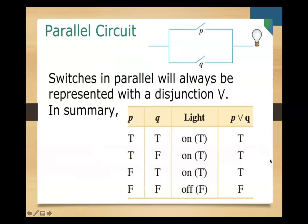We have the truth table for the parallel circuit. Switches in parallel are always represented with a disjunction (OR). In summary, the light is off only when both p and q are false. All other combinations are true. For parallel circuits, if either of the two switches is closed, the light is on.